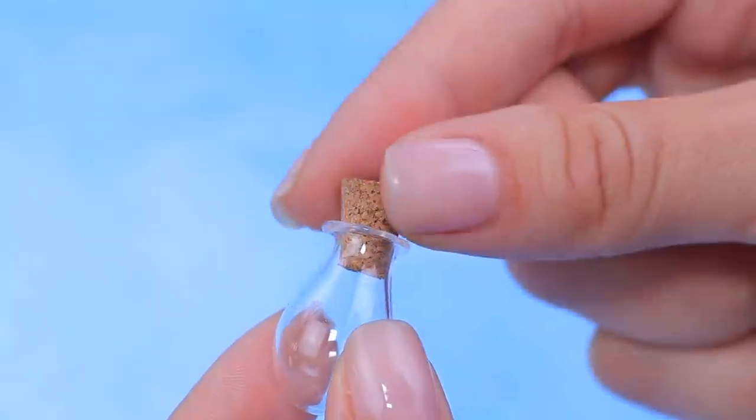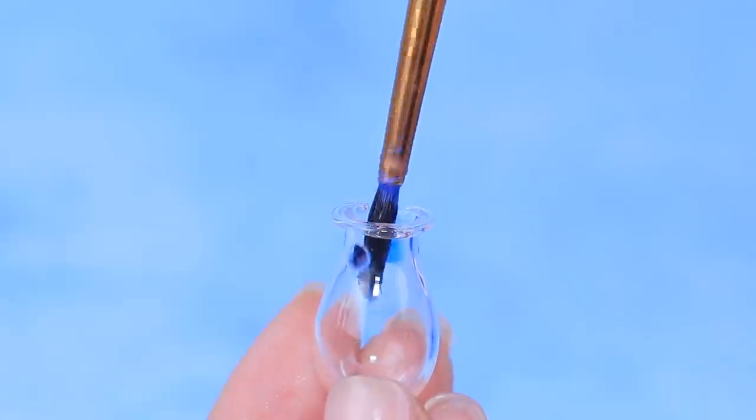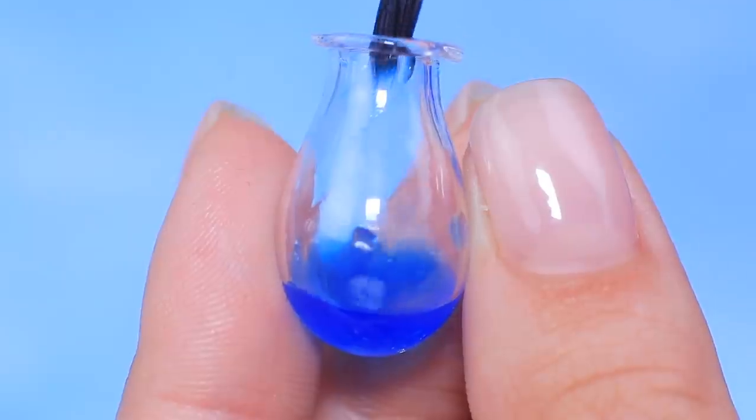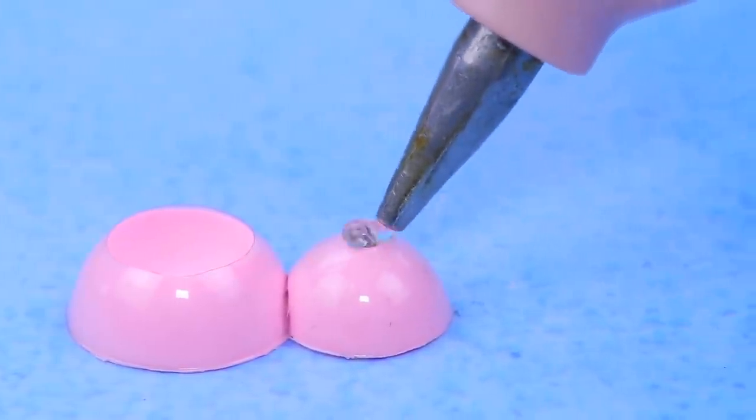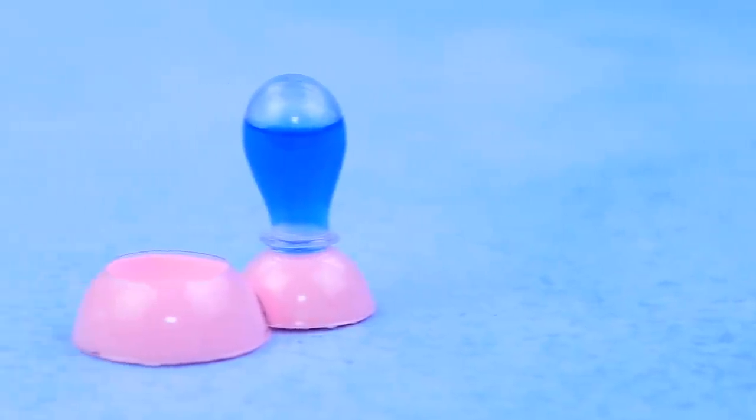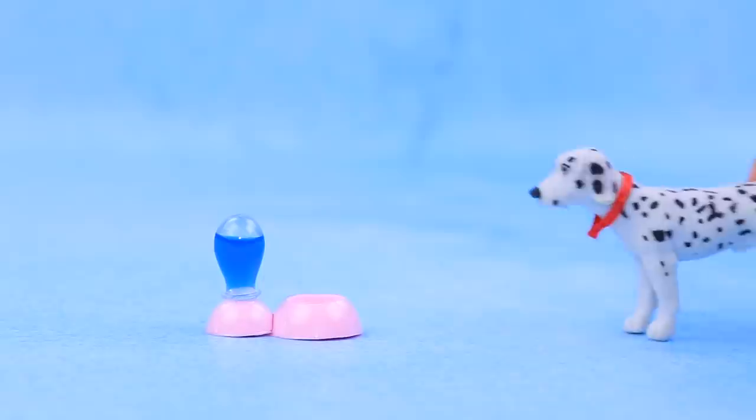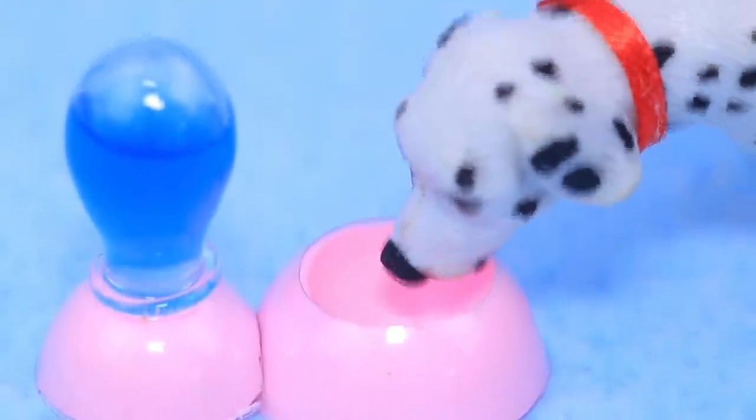Make a water station out of a small bottle. Pour in the painted water. Seal the bottle neck with hot glue and glue it to the second semi-sphere. Everything's ready! Now the dog always has fresh water to drink!